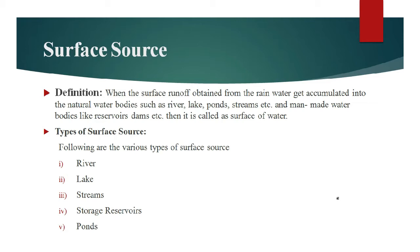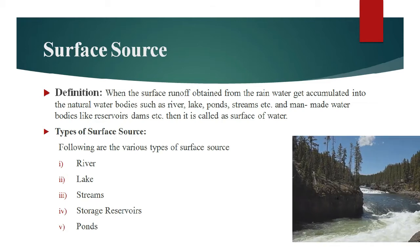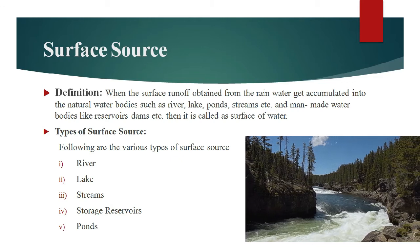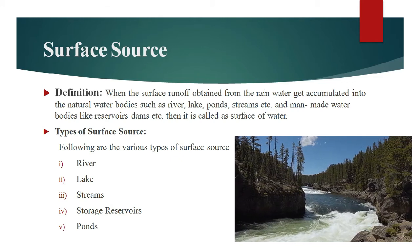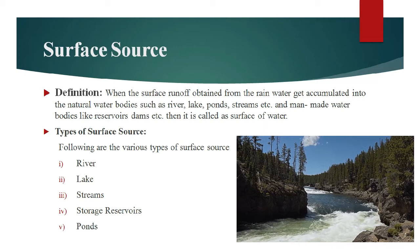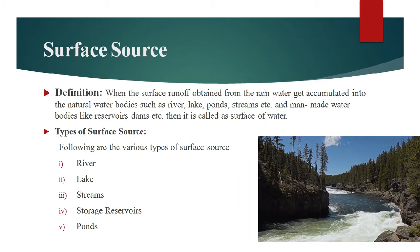The surface source means the water which stores on or above the ground — that source is called as surface source of water. There are various types of surface source: river, lake, streams, storage reservoir, and ponds. You all know and have seen all these sources. First we will see what is a river.